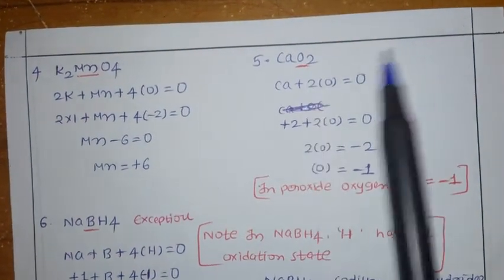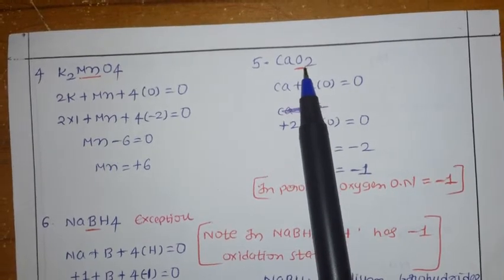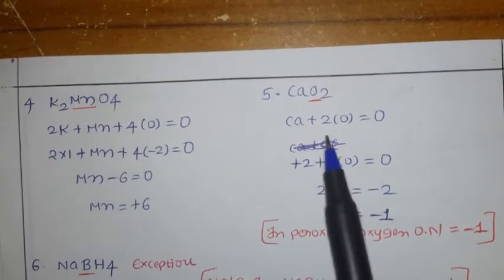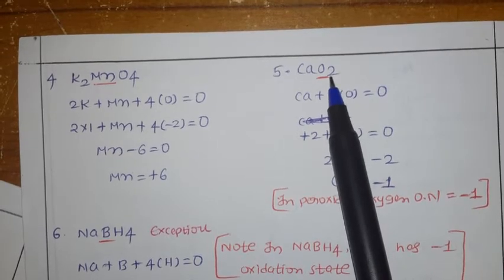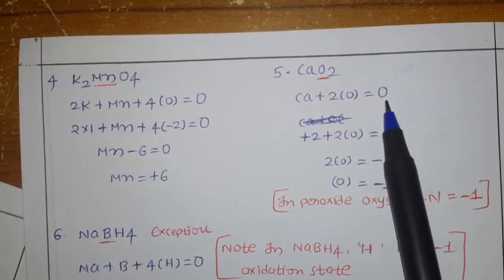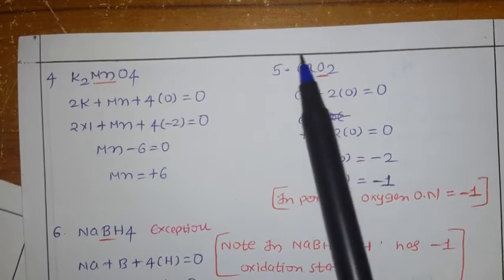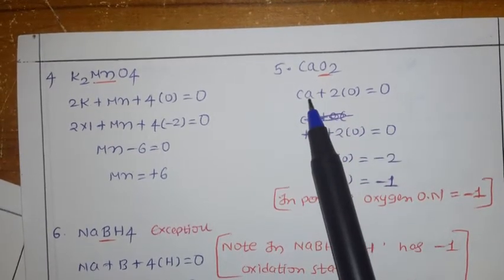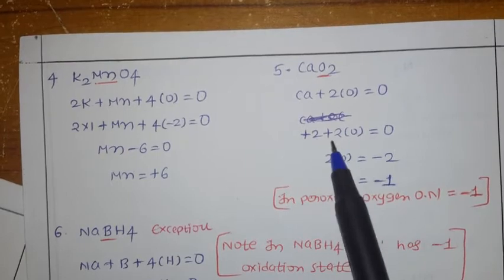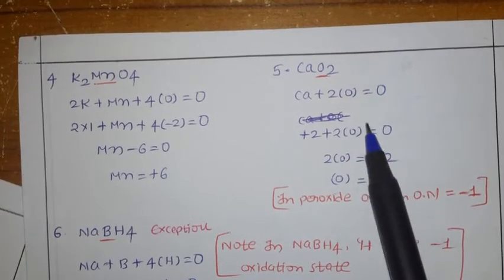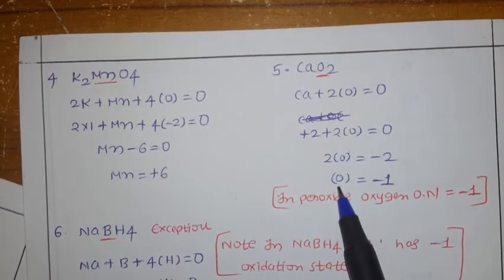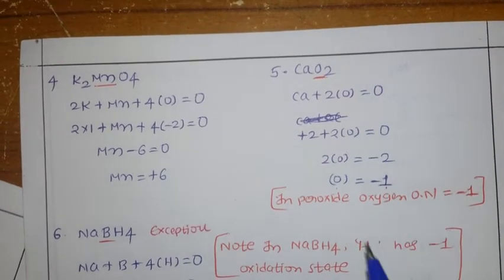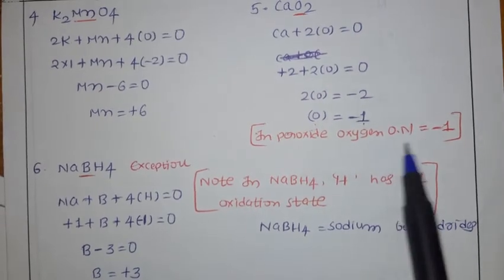Exception case: calcium peroxide CaO2. What is the oxidation number of oxygen? 1 calcium plus 2 oxygen atoms equal to 0 (neutral molecule). Calcium is group 2, oxidation state plus 2. So: plus 2 plus 2O equals 0, giving 2O equals minus 2, so 1 oxygen has oxidation number minus 1. In peroxide, oxygen oxidation number is minus 1.